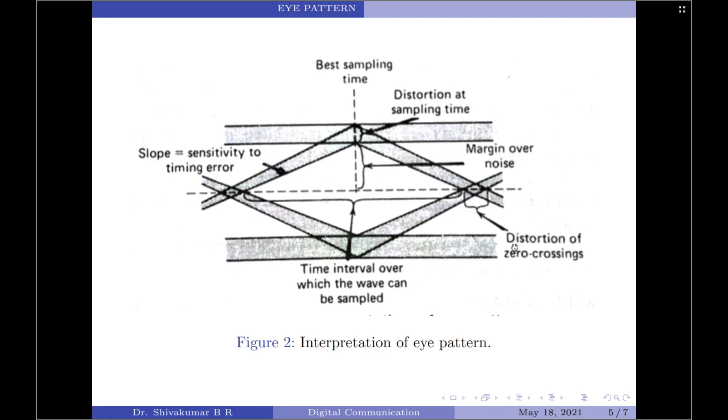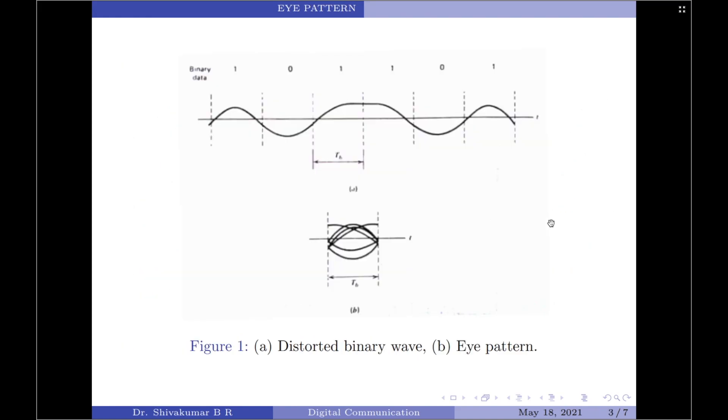We can understand distortions of zero crossings by looking into this diagram. If you look at this received signal carefully, we have the received signal passing through the time axis but it is not actually zero at integral multiple values of sampling instance.